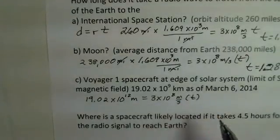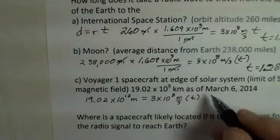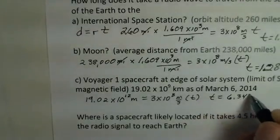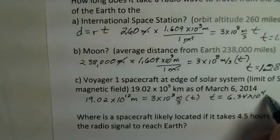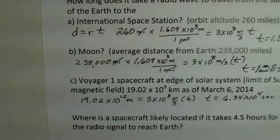3 times 10 to the 8th for the speed of light. And trying to calculate the time. Again, you're calculating this as well. And you find that the time is 6.34 times 10 to the 4th seconds.